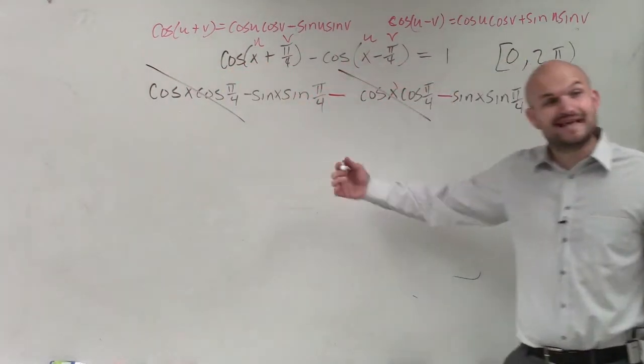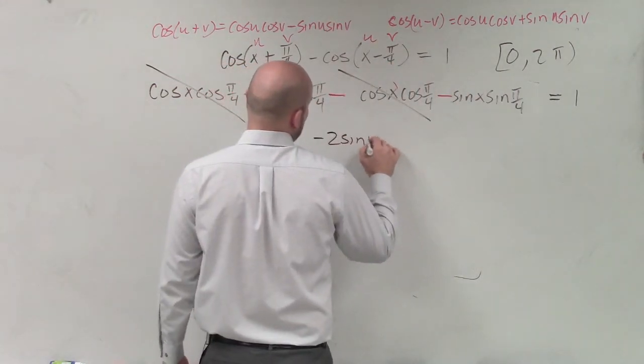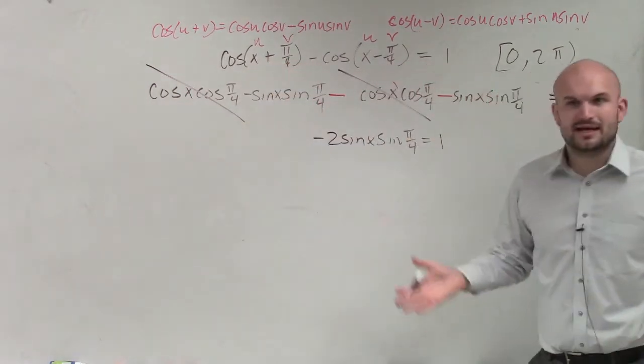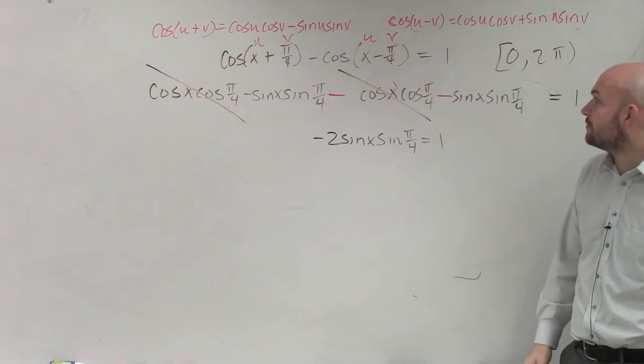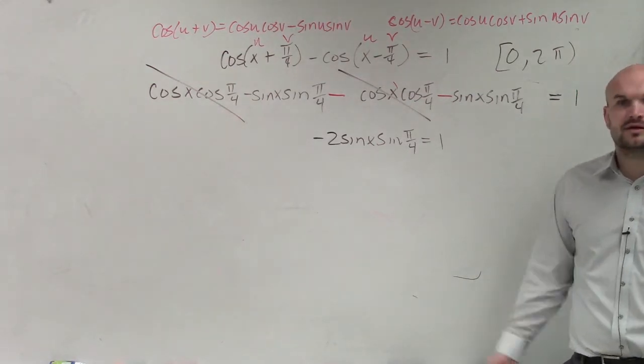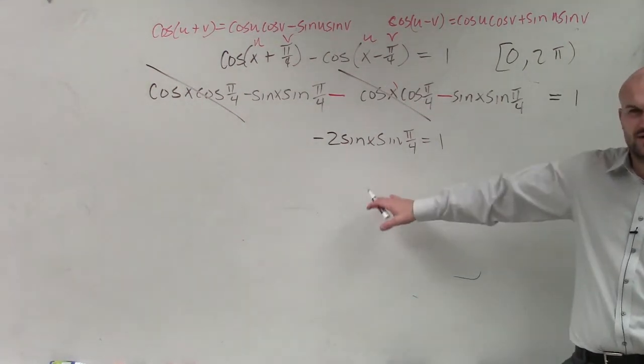Then I have two expressions that are exactly the same. So I can combine them to negative 2 sine of x sine of pi over 4 equals 1, right? Just like x plus x is 2x, sine of x sine of pi over 4 or minus, and then minus sine of x pi over 4 is going to be 2, minus 2 sine of x sine of pi over 4. Does everybody see how I did that?